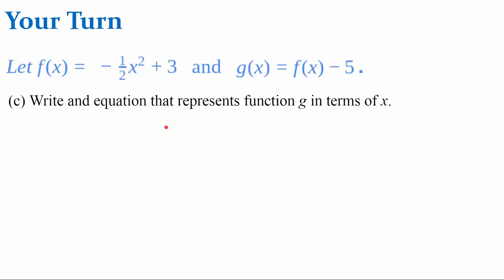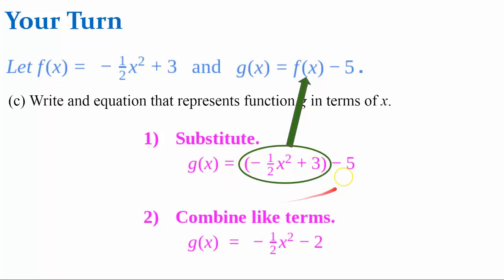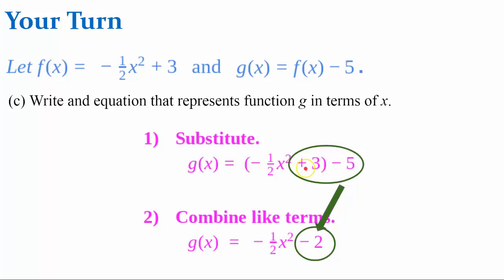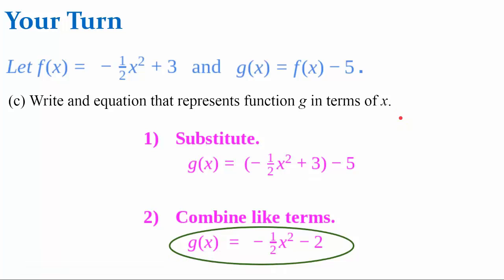So let's write an equation that represents function g in terms of x. We know that f of x equals negative one-half x squared plus 3, so we substitute that expression in and still subtract 5 from the transformation. Next, combine like terms: positive 3 subtract 5 equals negative 2. So our final answer is g of x equals negative one-half x squared minus 2.